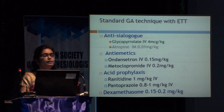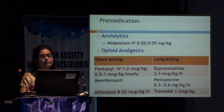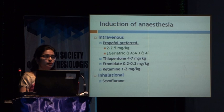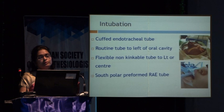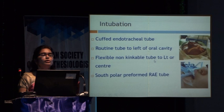Standard GA technique with endotracheal intubation — antisialogogue needs to be given. Antiemetics and acid prophylaxis must be timed to act in the post-operative period. Dexamethasone these days works as a wonder drug — it addresses post-operative nausea and vomiting, post-operative pain, and edema, so it is a good drug in nasal endoscopy. Anxiolytics and opioid analgesics as usual, depending on duration of surgery. Propofol is the preferred induction agent because of its bronchodilator actions. A routine tube can be fixed to the left since the surgeon is on the right and approaches the nasal cavity from the right. A flexible non-kinkable tube can be fixed left or center, or a south polar preformed RAE tube can be used.